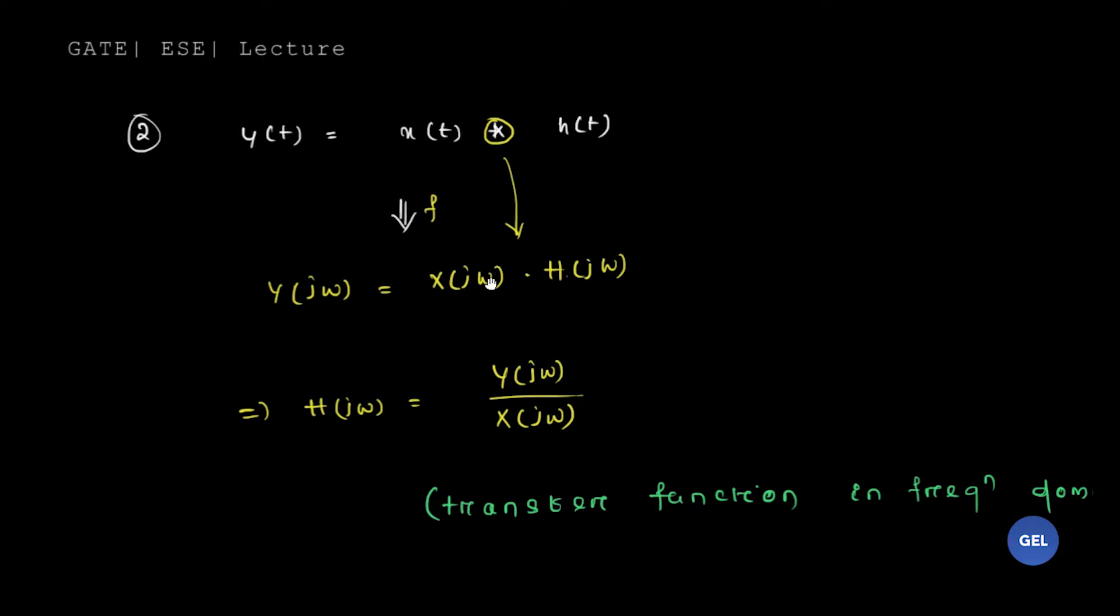But in frequency domain, that convolution is converted to multiplication. So the Fourier transform of your output, the Fourier transform of your response, is nothing but the multiplication of the Fourier transform of your input and your transfer function.